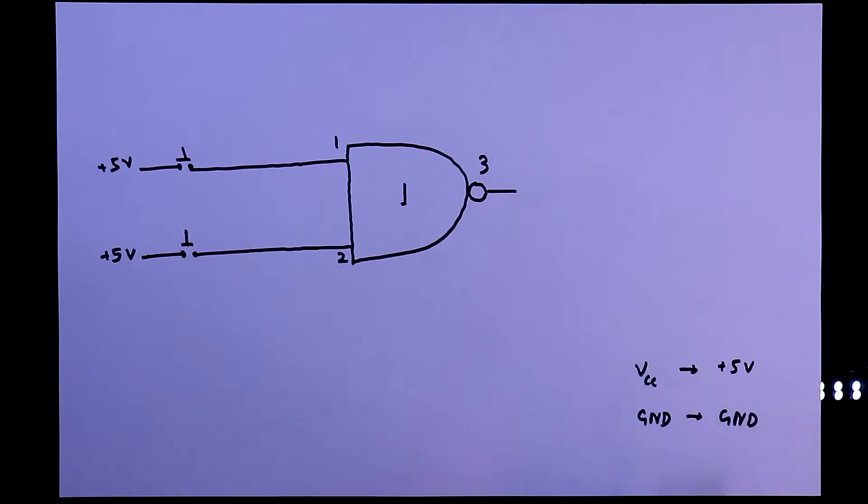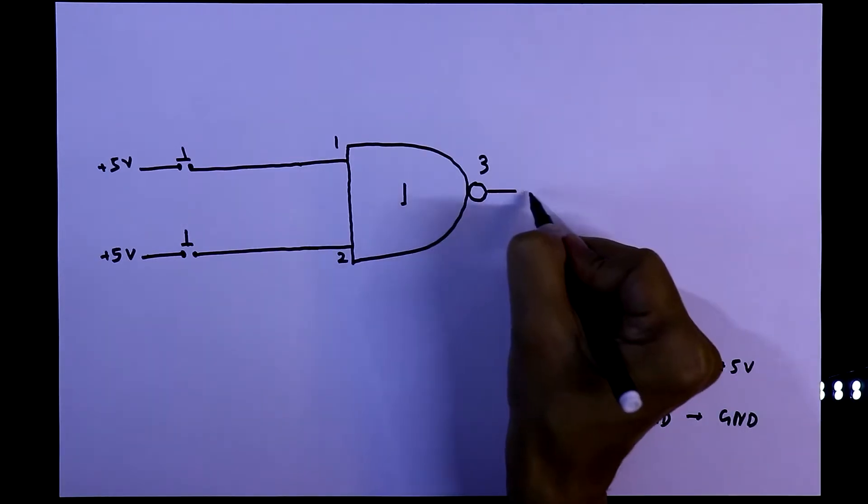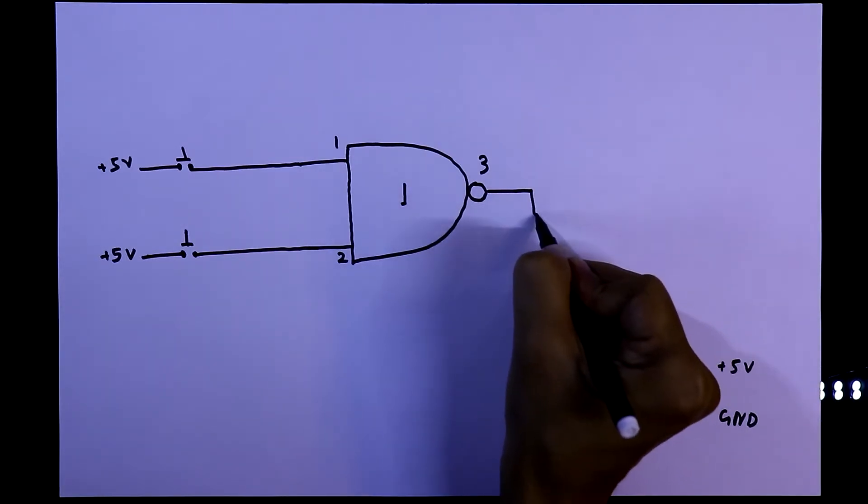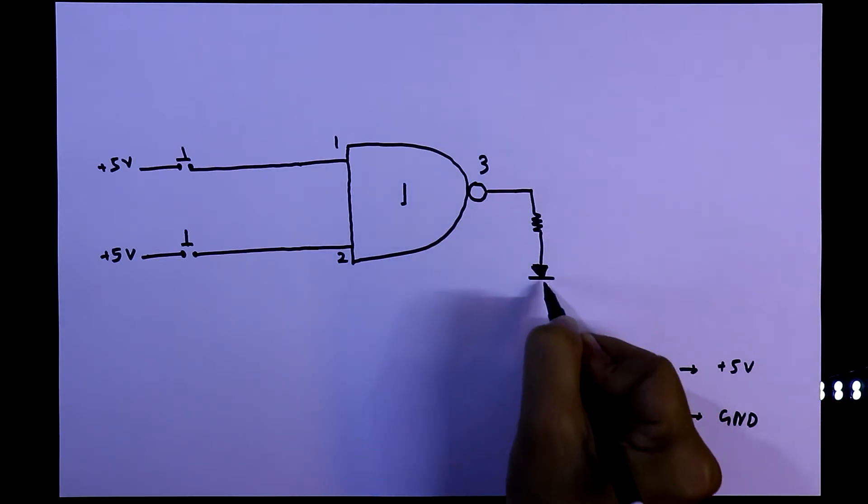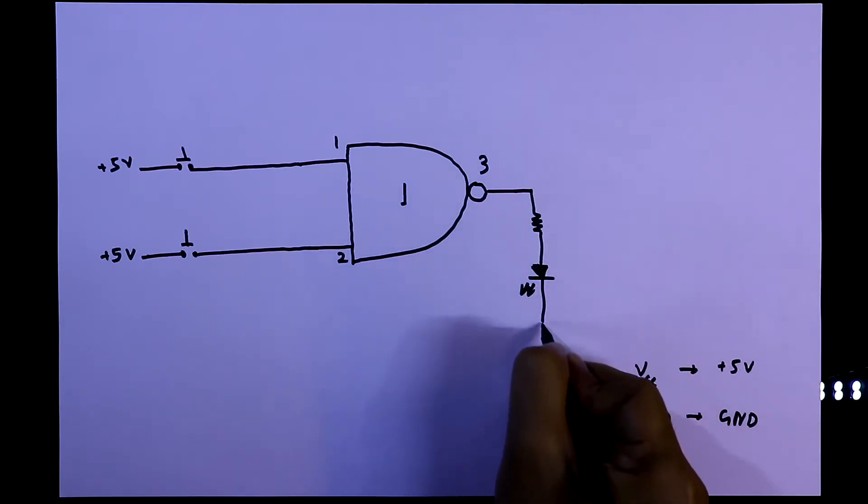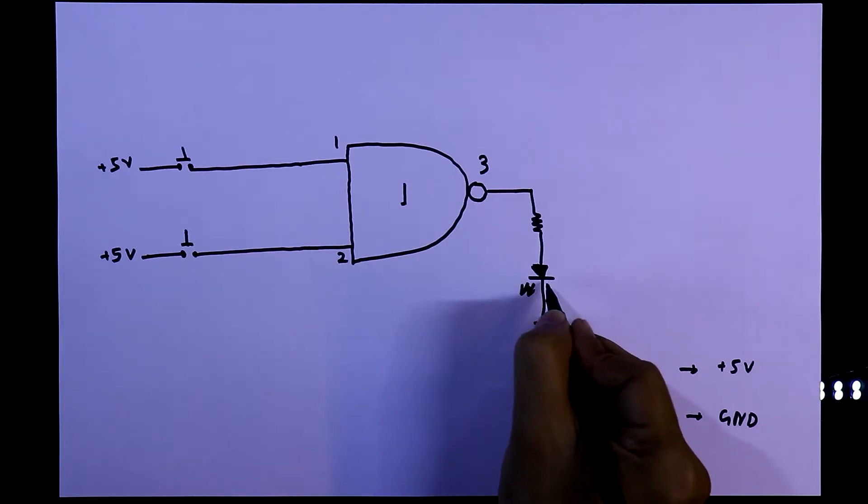It is, obviously it is ground. And with the output, we have to connect a resistor and then an LED to see the output. Negative pin is connected to the ground.